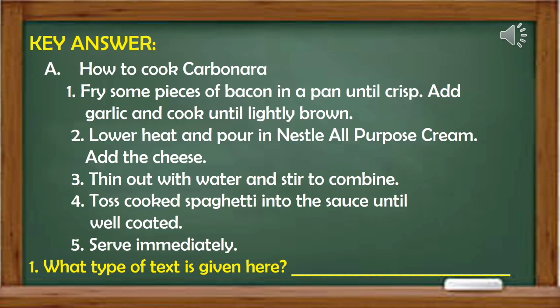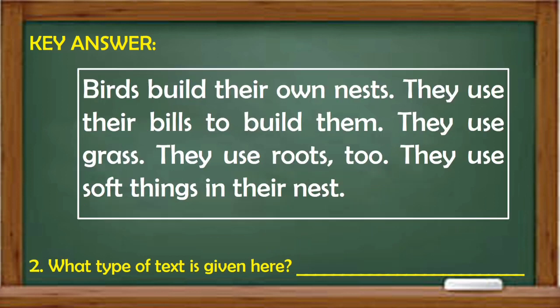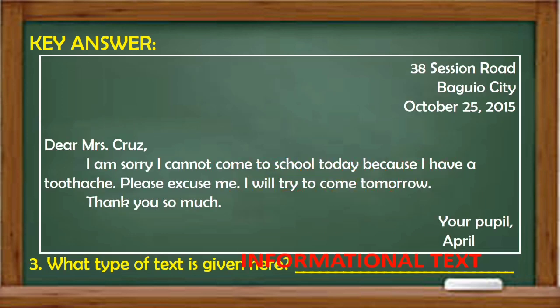Here are the key answers. For number one: procedural text. Number two: text that enumerates. And lastly, for number three: informational text. You can always go back to the part where you got wrong.